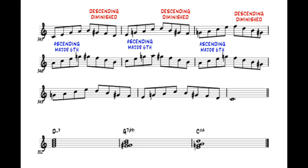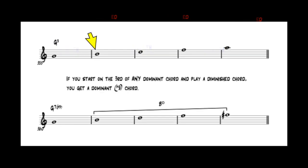I'd like to show you why the descending diminished works so well with the C major and C minor ascending chords. If you start on the third of any dominant chord and play a diminished arpeggio, you get a dominant flat 9 chord.